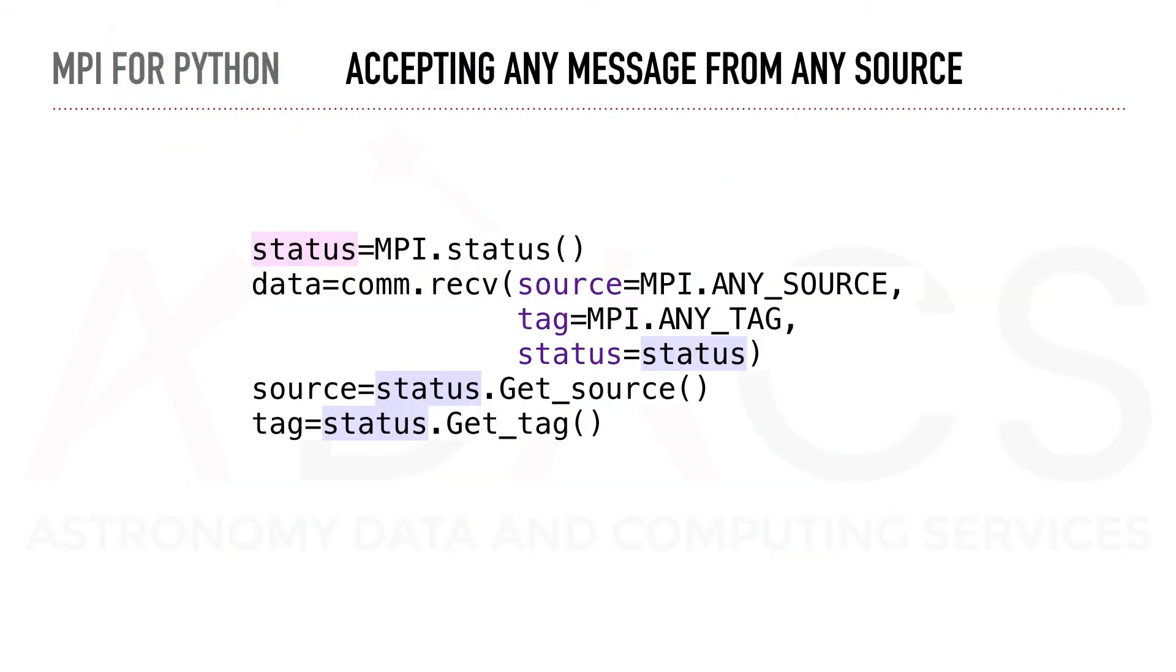Finally, it is possible to receive messages from any sources. This can be done by specifying the MPI.ANY_SOURCE for the source and MPI.ANY_TAG for the tag.